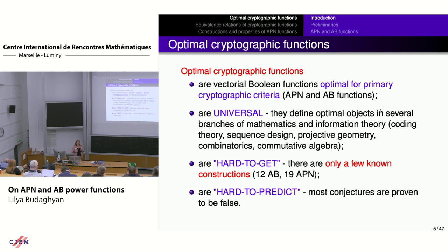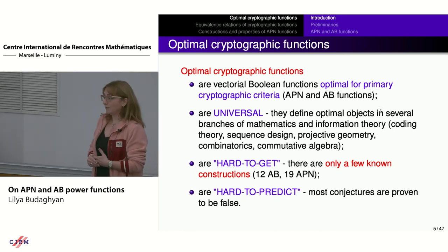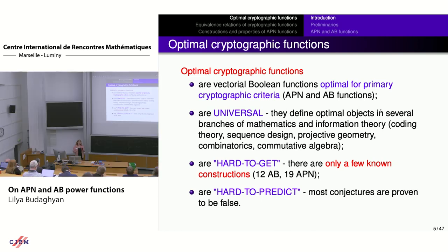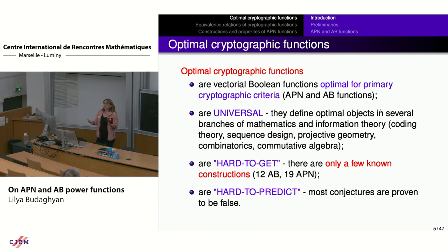What is really nice about these objects is that they seem to be universal — they define optimal objects not only in cryptography, but in many other domains of mathematics and information theory. We believe the list of these domains can be continued in the future, as we always find new applications. And because of this universality, we can use techniques and tools developed in all these theories to solve problems for cryptographic functions, and vice versa.